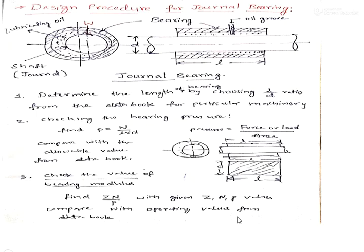This diagram shows a line diagram of the journal bearing. The outer ring is the bearing housing, the journal is the inner element, and the shaft passes through with lubricating oil between them. Another view shows the length of the bearing and the oil groove. The first step, as discussed, is to find the length of the bearing from the L/D ratios from the data book.